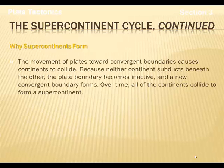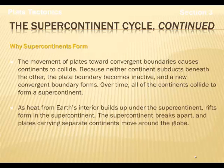Why do supercontinents form? The movement of plates toward convergent boundaries causes continents to collide. Because neither continent subducts beneath the other, the plate boundary becomes inactive and a new convergent boundary has to form. Because heat from inside the planet has to be released, it may form different rifting areas throughout the planet, causing other continents to break up and rift apart. Over time, all of the continents collide to form a supercontinent. As heat builds up inside the planet again, rifting occurs, and the continents pull back apart and go their separate ways.